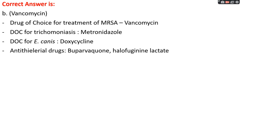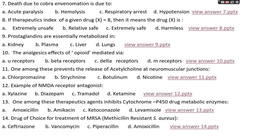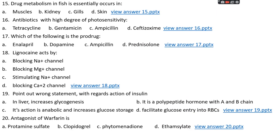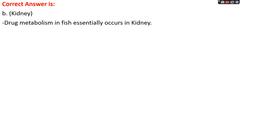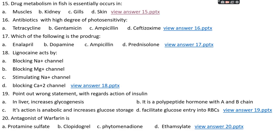Question number fifteen: drug metabolism in fish essentially occurs in — option A: muscles, option B: kidney, option C: gills, or option D: skin. The right answer is option B, kidney. Drug metabolism in fish essentially occurs in the kidney. Question number sixteen: an antibiotic with a high degree of photosensitivity is — option A: tetracycline, option B: gentamicin, option C: ampicillin, or option D: ceftriaxone.